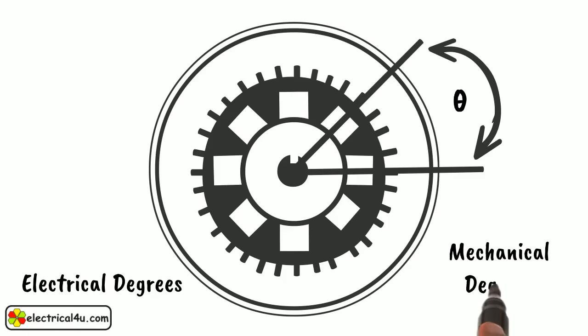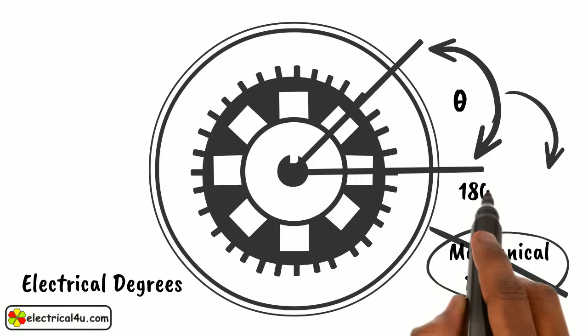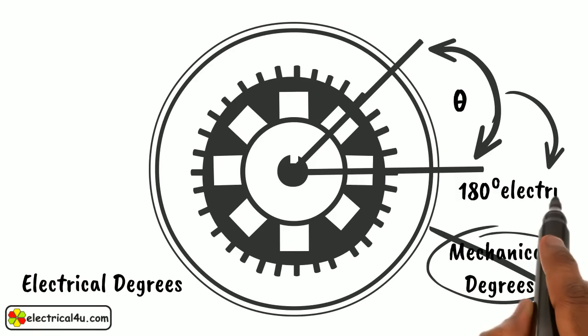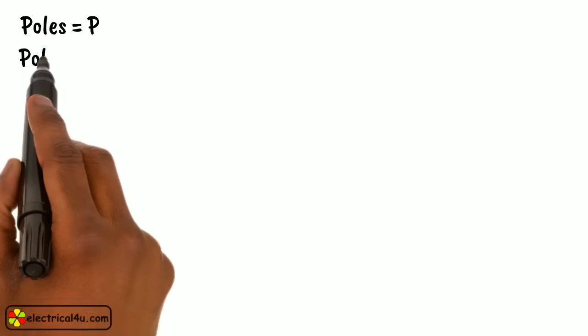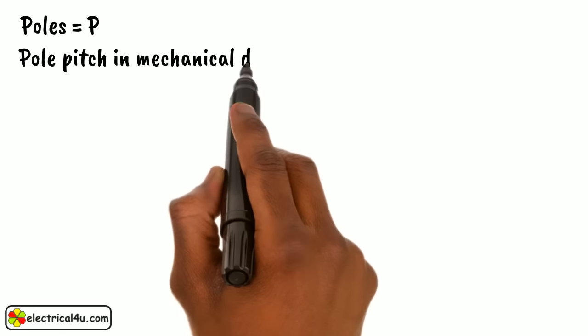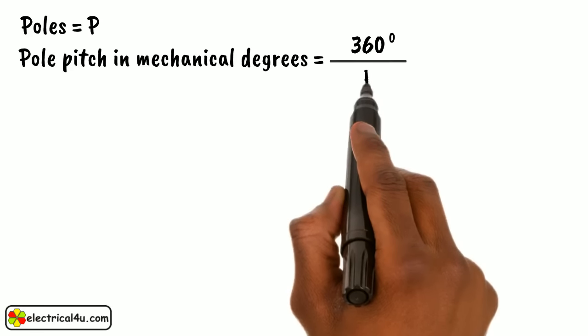But not in mechanical degrees. One pole pitch is equal to 180 degrees electrical. If there are p number of poles in a machine, then the pole pitch in mechanical degrees can be expressed as 360 by p.